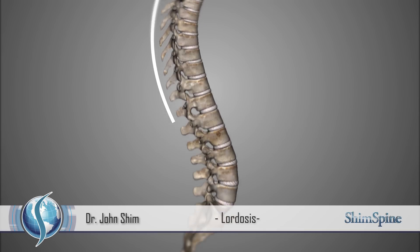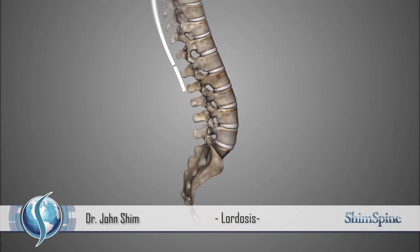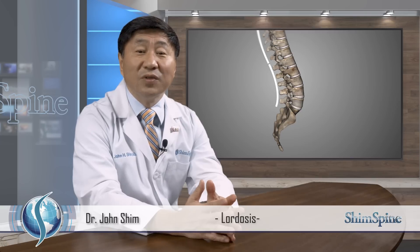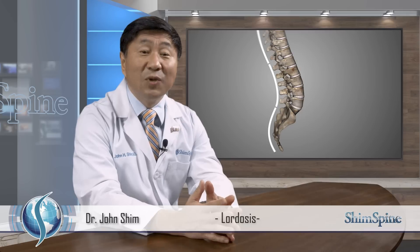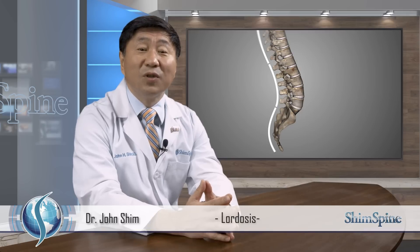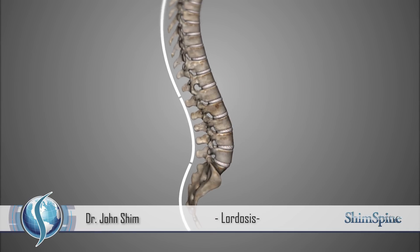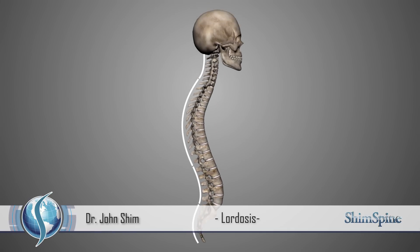The lower back, which is called the lumbar spine, then curves backwards again. Then, at the bottom of your spine, the so-called sacrum forms another forward curvature and becomes another protective space with the pelvic bones to house your bowels.